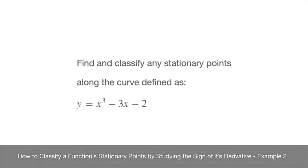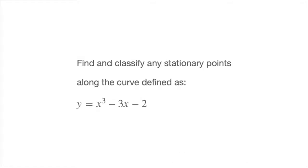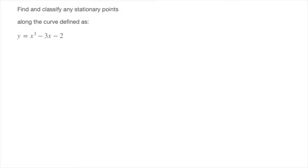We now work through a second example in which we both find and classify a function's stationary points using its derivative. We're asked to find and classify any stationary points along the curve defined as y equals x to the power of 3 minus 3x minus 2. To find and classify this curve's stationary points, we're going to follow the same 3-step method that we saw in the first tutorial.